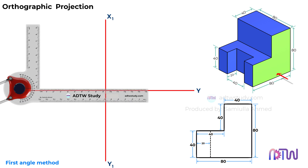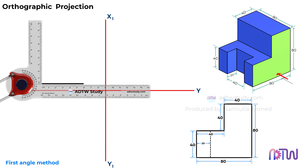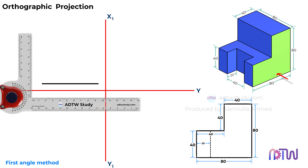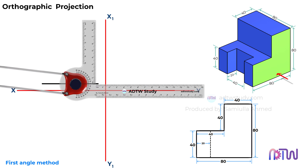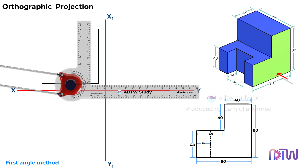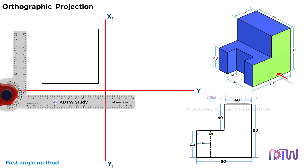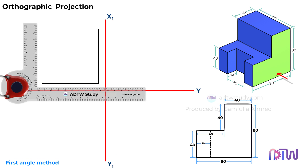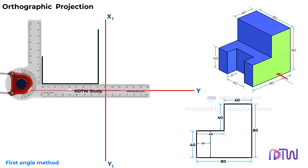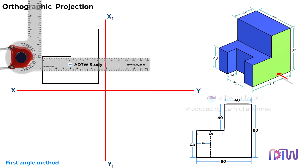Take a drafter and draw a horizontal line of 80 millimeters as shown. Next, draw a vertical line of 80 millimeters. After this, draw a 40 millimeter vertical line from this point. Next, draw a 40 millimeter horizontal line as shown, then another 40 millimeter horizontal line as shown.